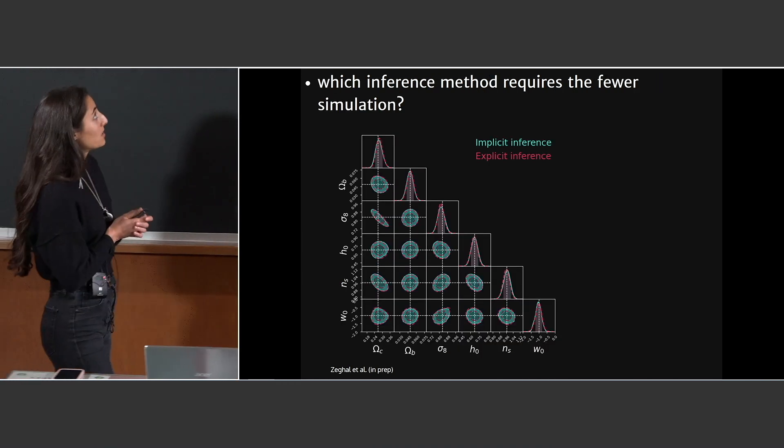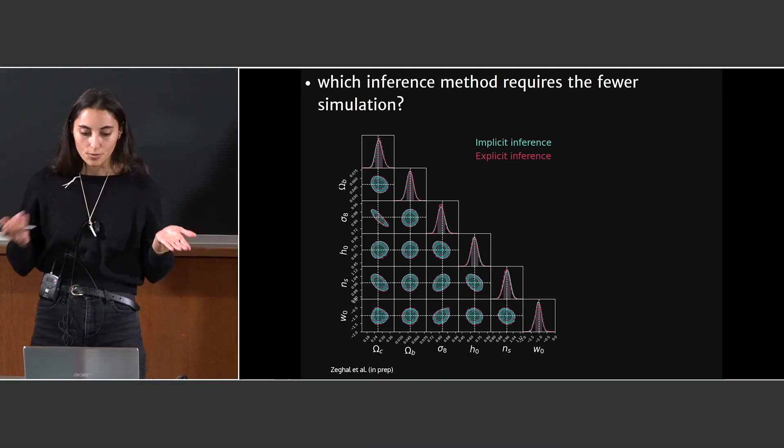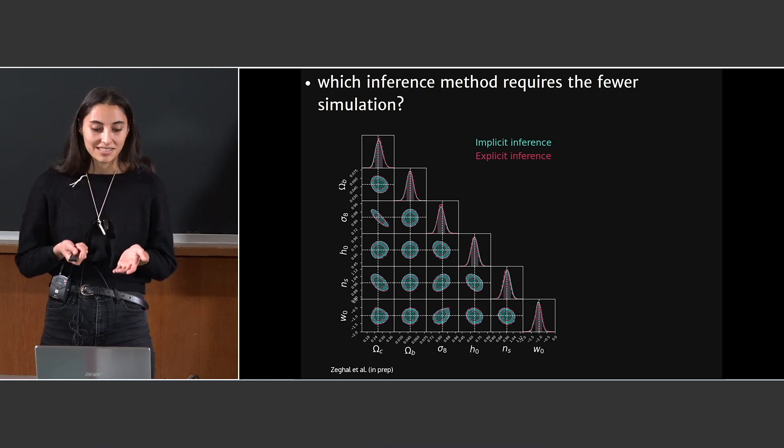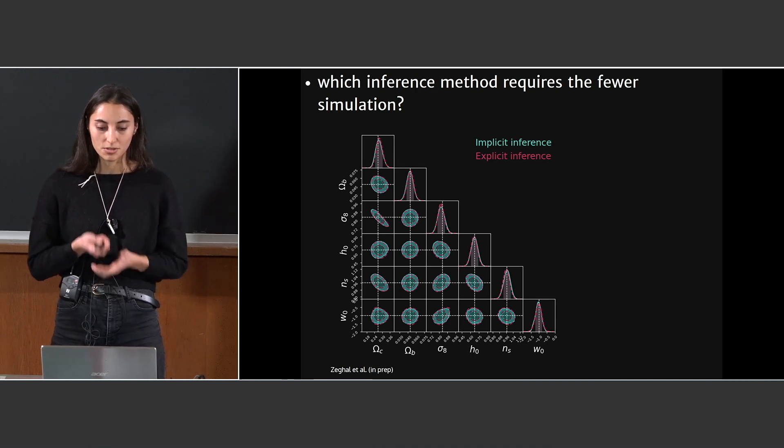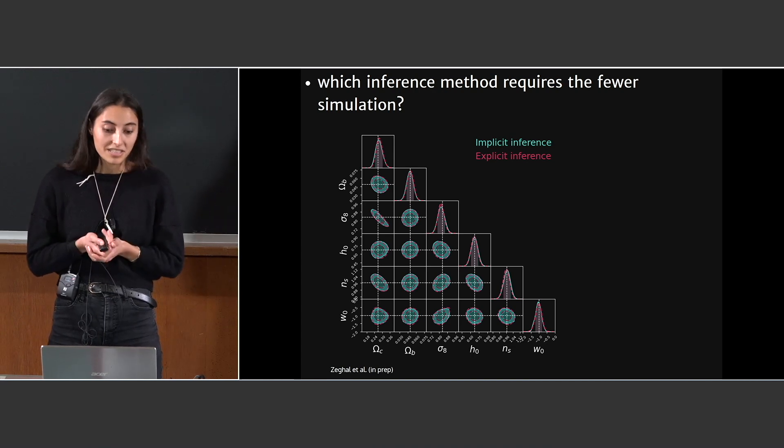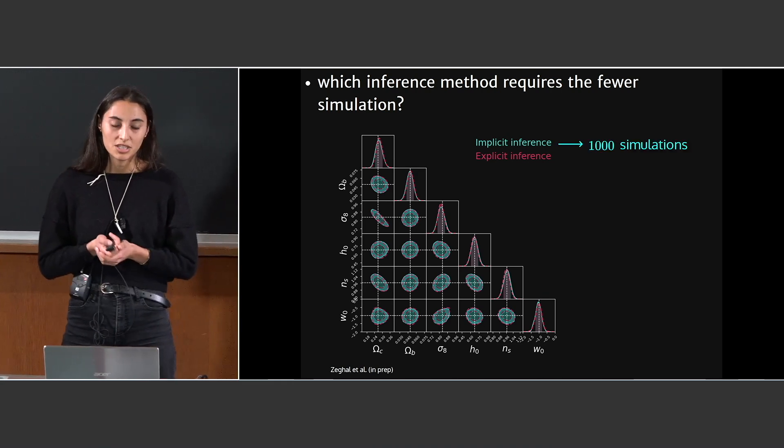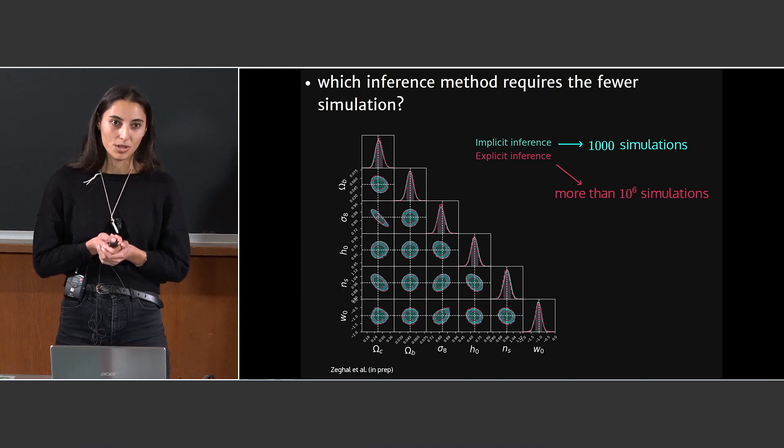The second result is the comparison between the two full-field approaches, the implicit one and the explicit one. As you can see, they have the exact same contour on the cosmological parameters. The only difference is that for implicit inference we use 1,000 simulations, and for explicit inference we use more than 1 million simulations.